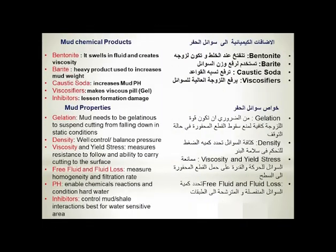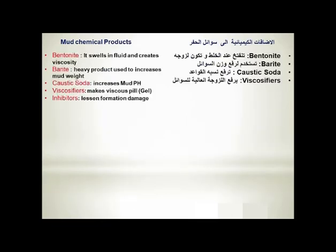Regarding chemical additions to drilling fluids: the major required chemical products added to achieve the necessary drilling properties are bentonite, barite, caustic soda, viscosifiers, and inhibitors. Bentonite swells in fluid and creates viscosity. Barite contains heavy-weight solids used to increase mud weight. Caustic soda is used to increase pH. Viscosifiers make the mud more viscous. And inhibitors are used to lessen formation damage. These aspects will be discussed in detail in upcoming videos.